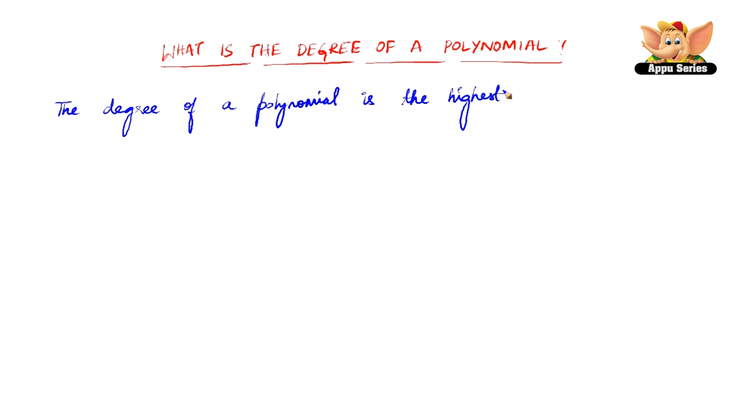Here, let us see what is the degree of a polynomial. The degree of a polynomial is the highest exponent of a variable in the given polynomial.